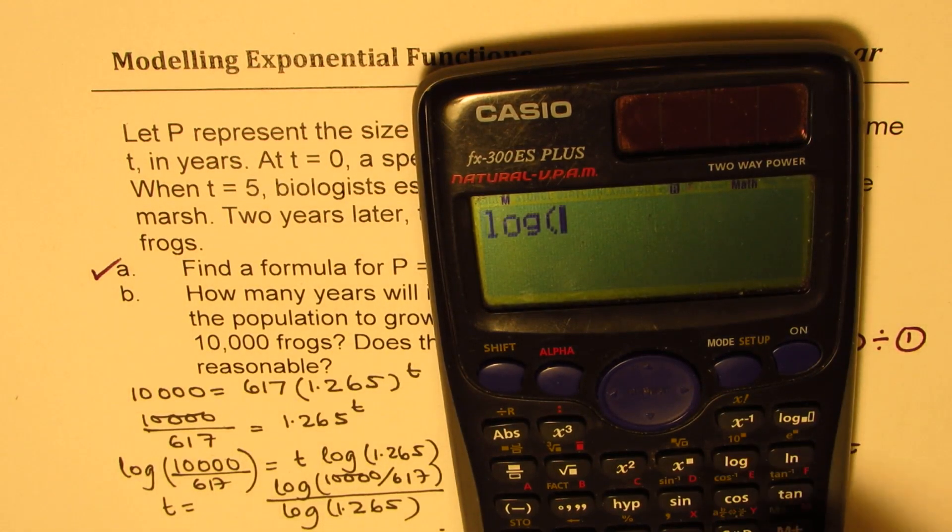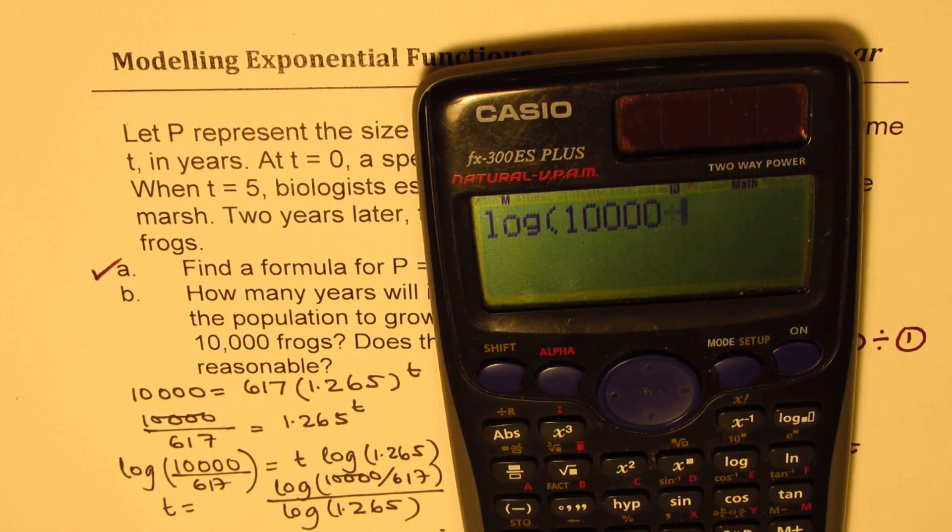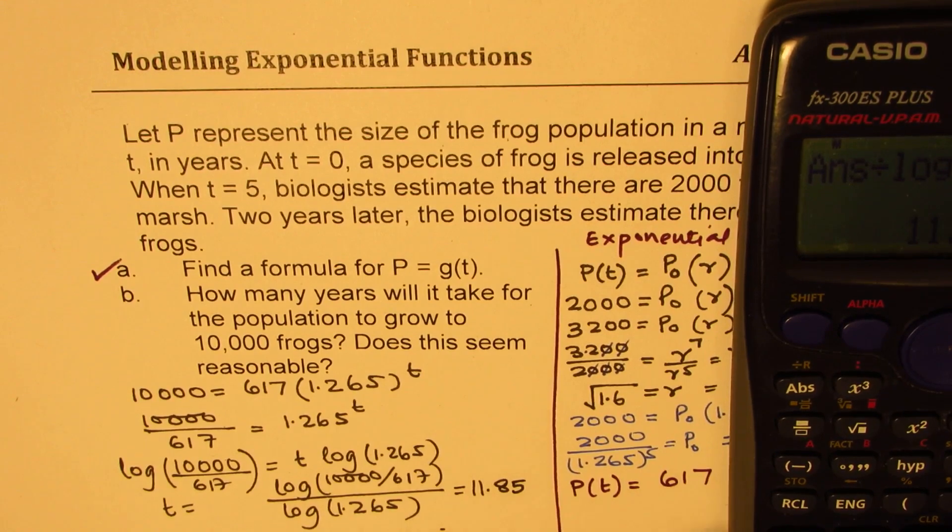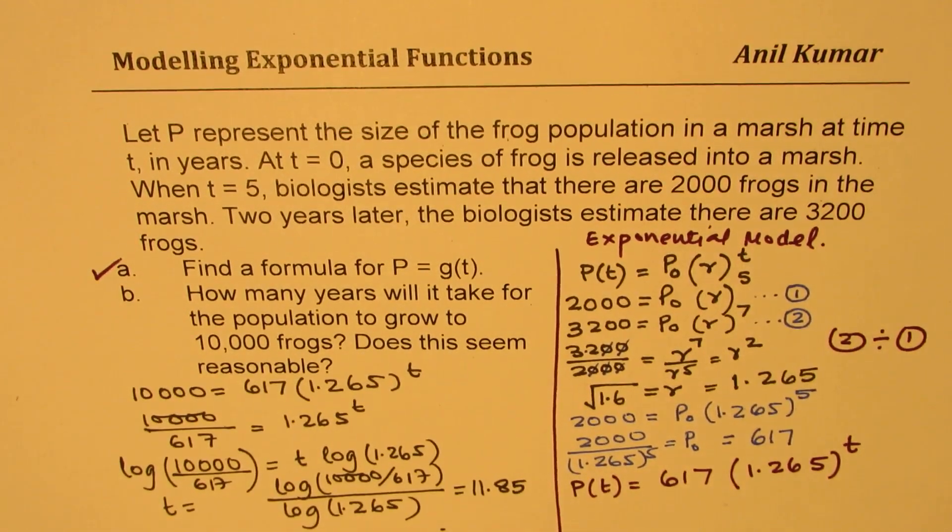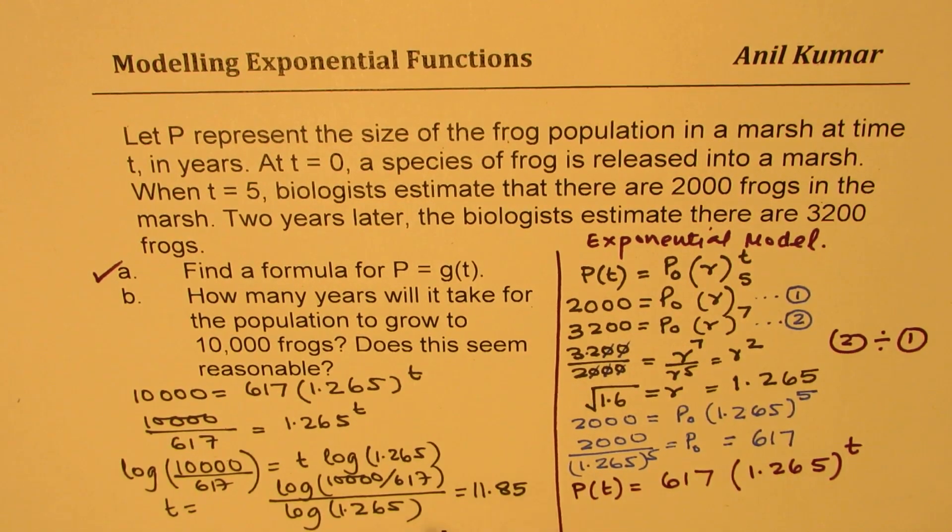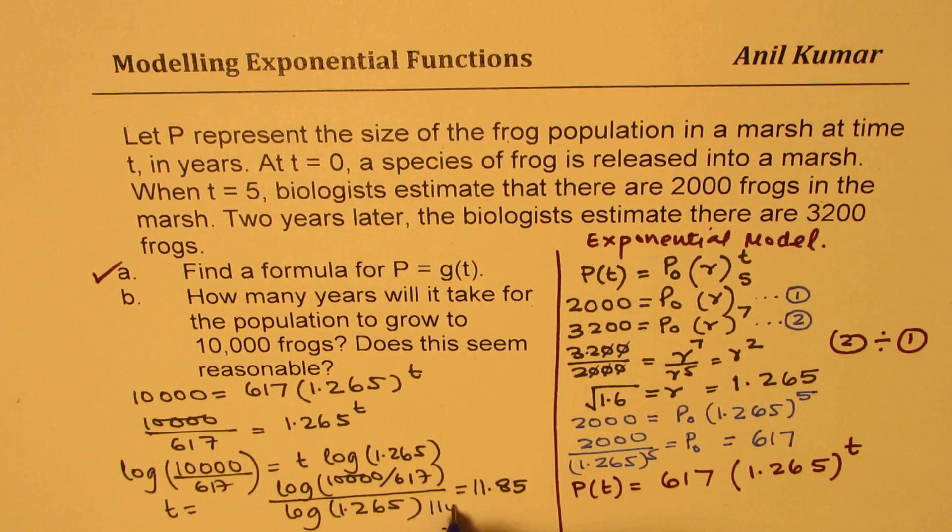So we have log of 10,000 divided by 617. And we'll divide this by log of 1.265, which gives us 11.849. Let's say 11.85. So almost 11 years and 10 months, right? So that is the time when the population will increase, so we can say 11 years and 10 months.